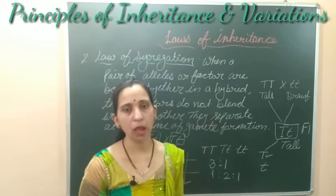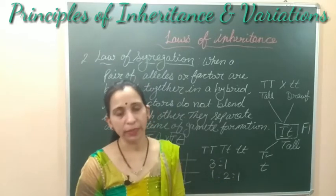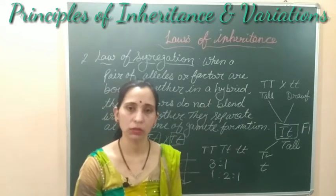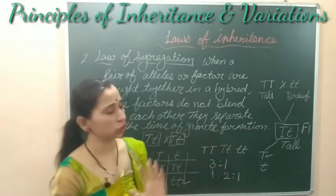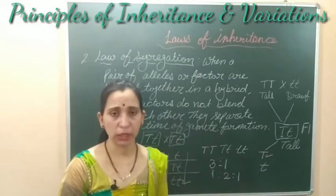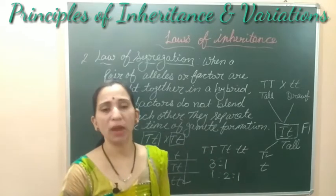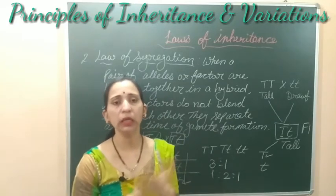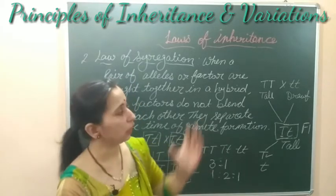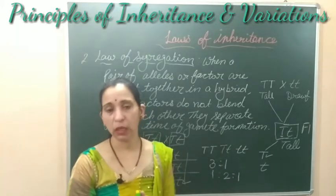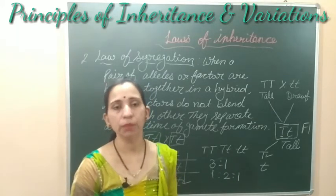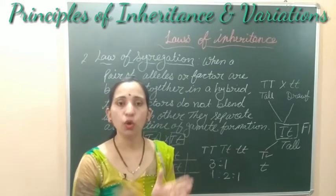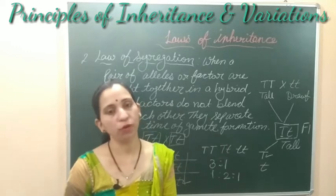Both the law of dominance and the law of segregation can be explained with the monohybrid cross. However, the next law — the law of independent assortment — can only be explained with the dihybrid cross. It's also worth noting that the law of dominance is not applicable in all cases; exceptions like incomplete dominance and co-dominance exist, which we will discuss in a separate video.